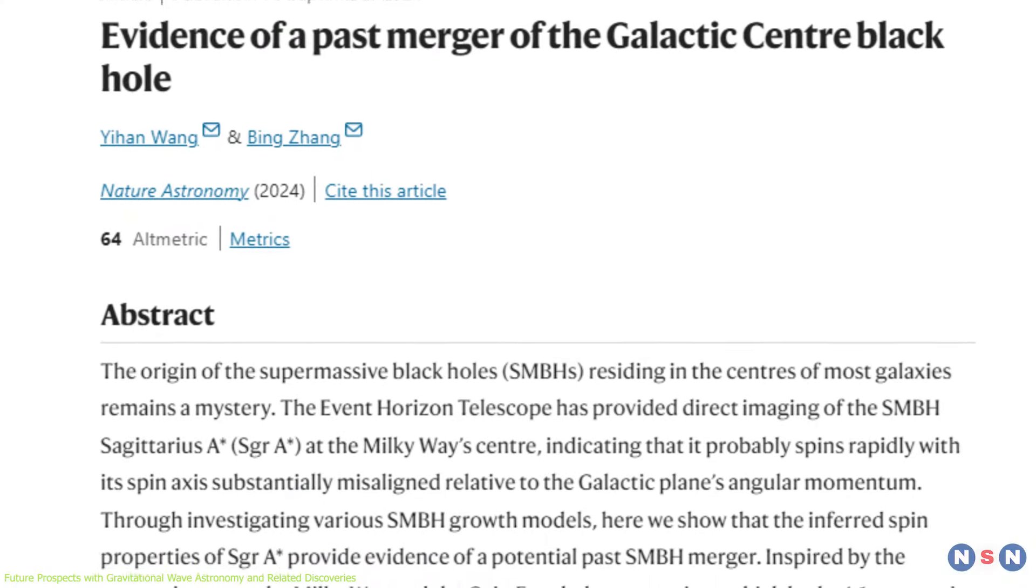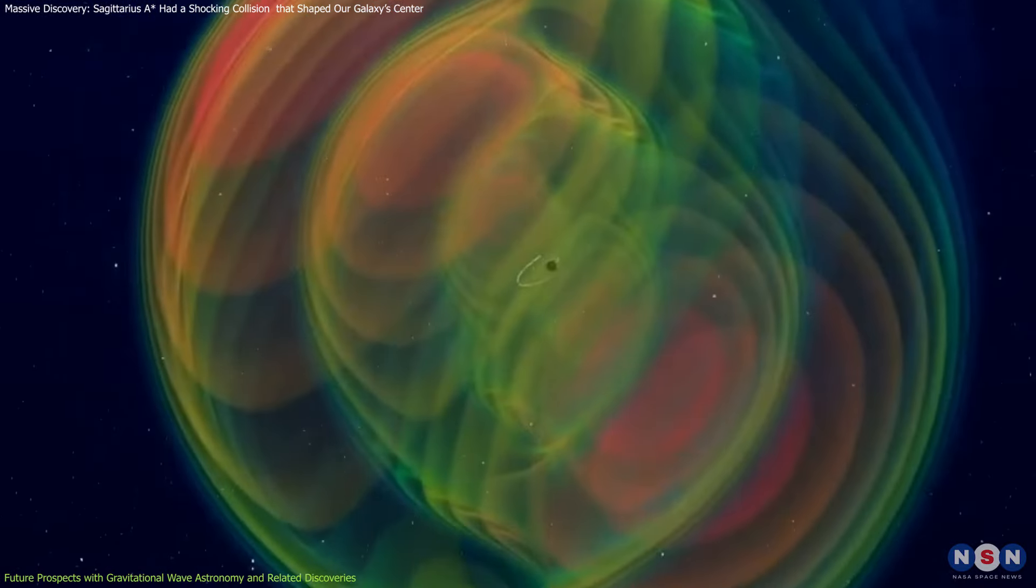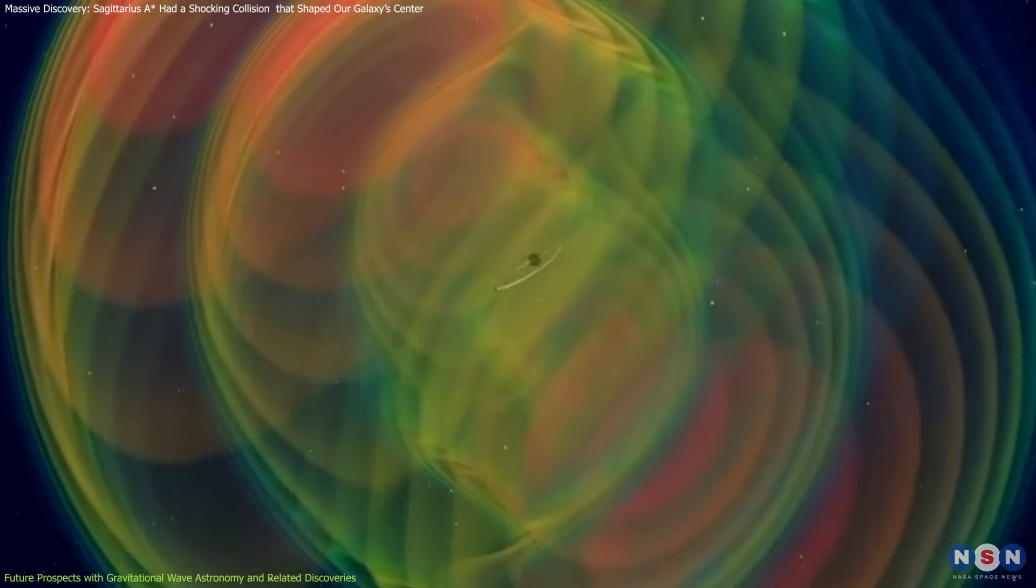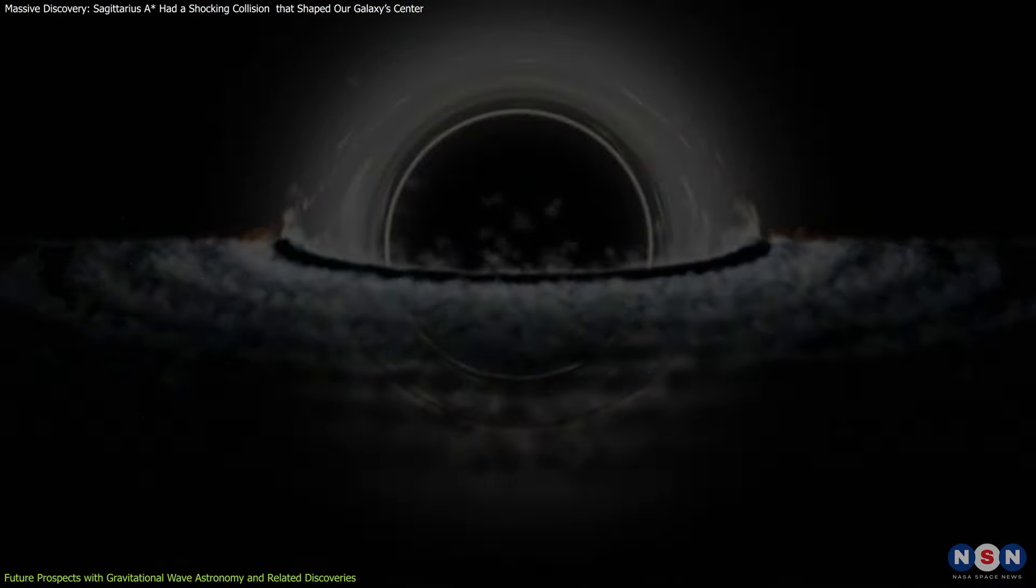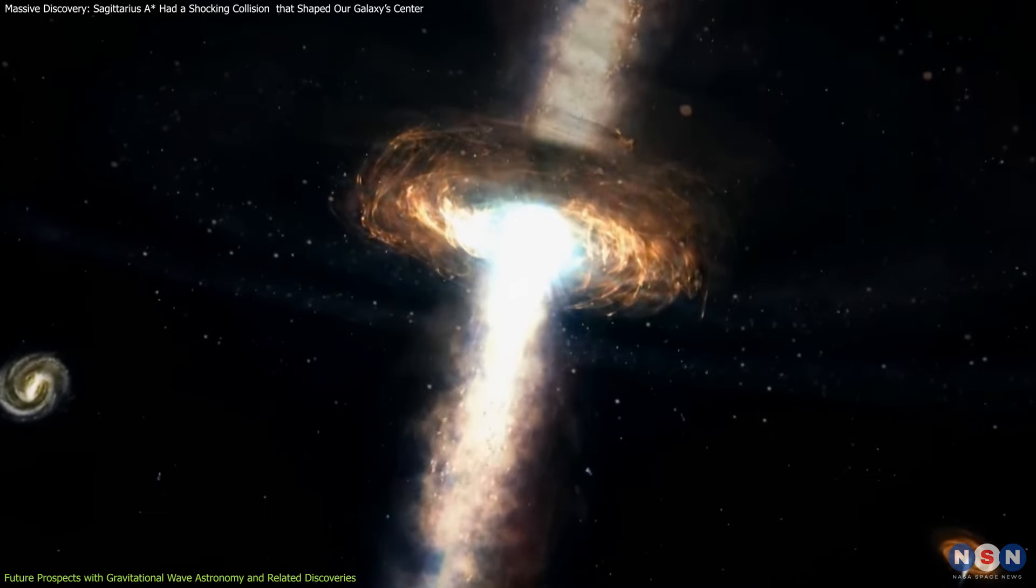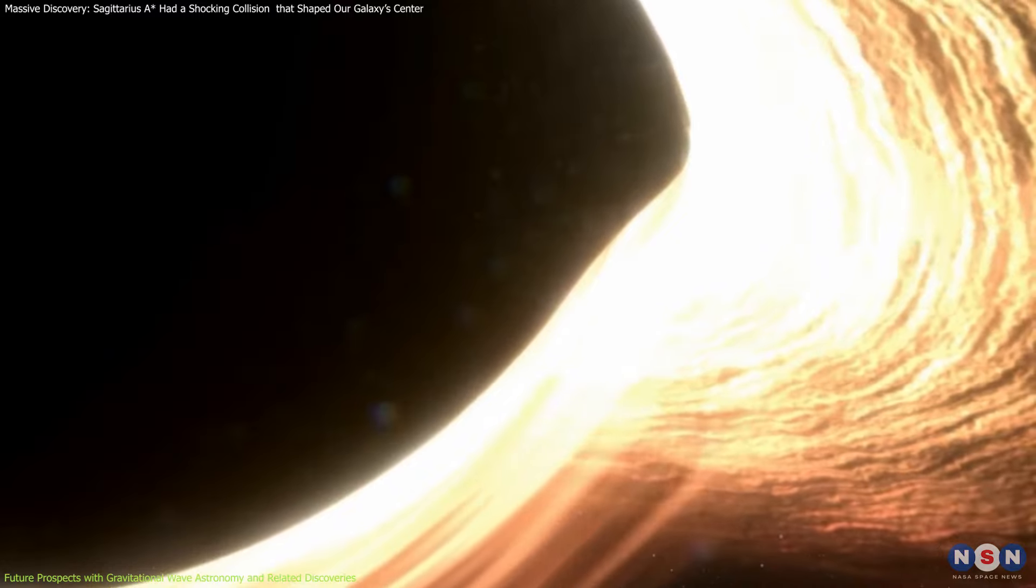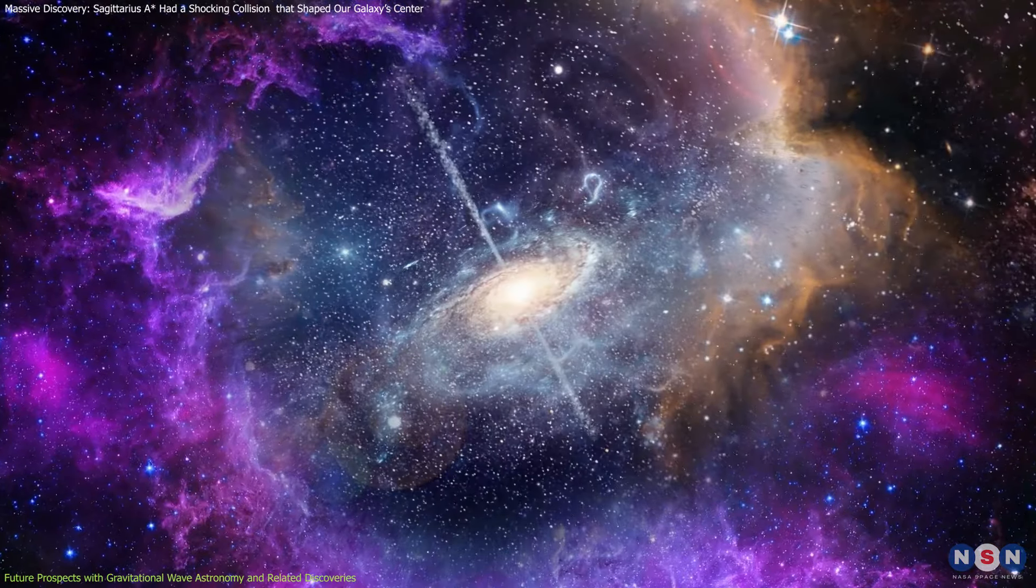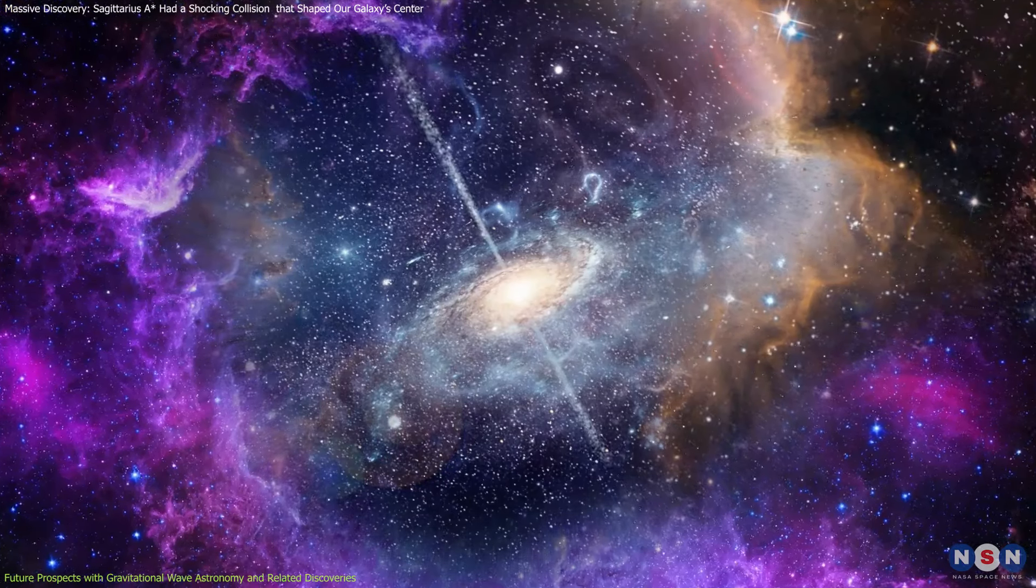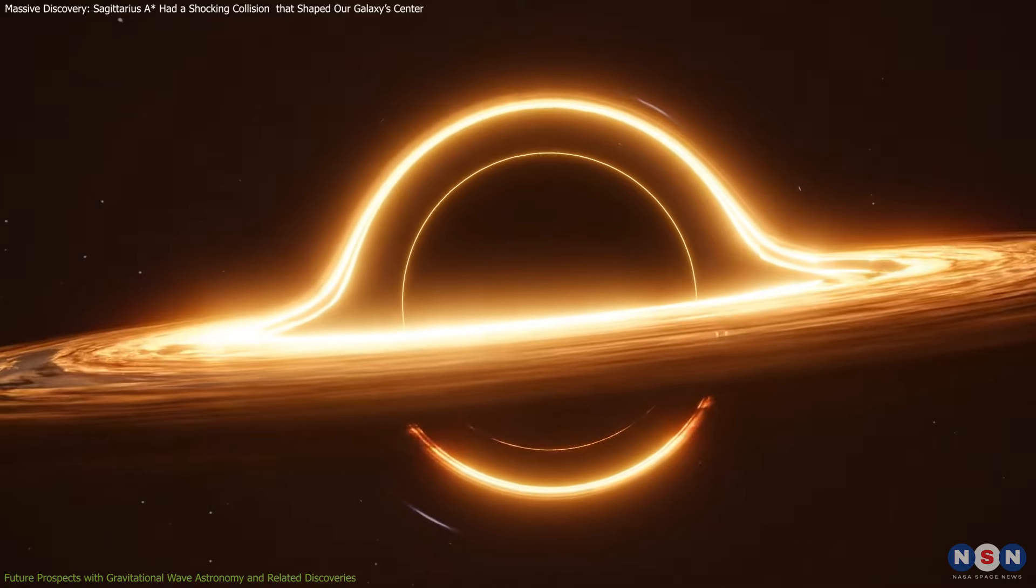By merging these different streams of research—direct imaging from the EHT, future gravitational wave detections with LISA, and new insights into intermediate-mass black holes—we are on the verge of creating a comprehensive map of how black holes form, grow, and influence their surroundings. The cosmos is a complex web of interconnected phenomena, and these studies bring us one step closer to unraveling its deepest mysteries.